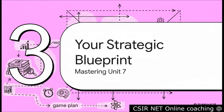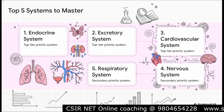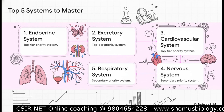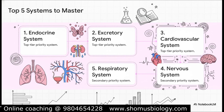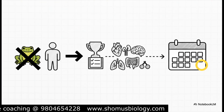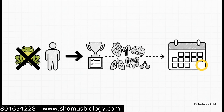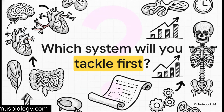We've analyzed the syllabus, prioritized all the topics, and decoded the question pattern. Now let's put it all together — this is your final, actionable game plan for absolutely mastering Unit 7. If you're short on time, focus all your energy on the endocrine, excretory, and cardiovascular systems as your absolute top priorities, then hit the nervous and respiratory systems right after. Get these five down, and honestly, you are good to go. Replace all that confusion and anxiety about Unit 7 with a clear, targeted strategy: stop thinking about animal physiology, focus on human physiology, master those top five systems, and time your deep-dive memorization for the final weeks before your exam. Study smart, not just hard. That's your blueprint for cracking Unit 7.